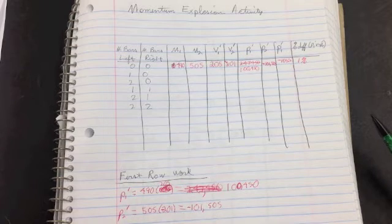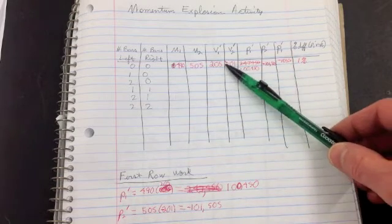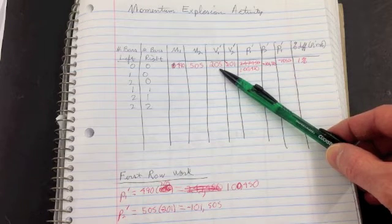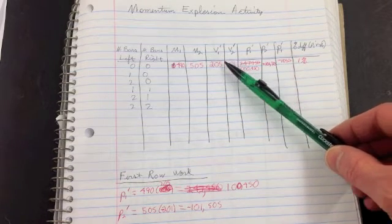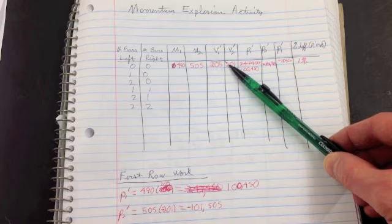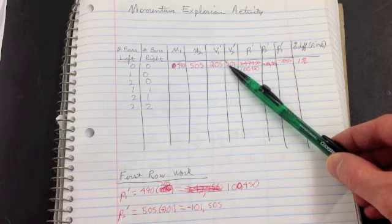So I know my initial momentum is going to be zero. So I measured my velocity of the first cart and my velocity of the second. And you notice one of them will have to be negative. And obviously I forgot that to start with.